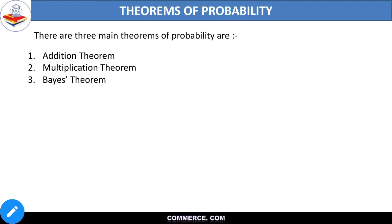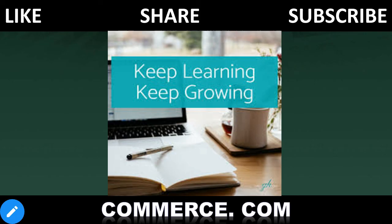Kal padhenge ki theorem of probability kya hai — jiske andar teen theorems hain: additional theorem, multiplication theorem, and Bayes' theorem. So don't miss the next lecture. Until then, keep learning, keep growing. Like this video and subscribe to commerce.com. Thank you.